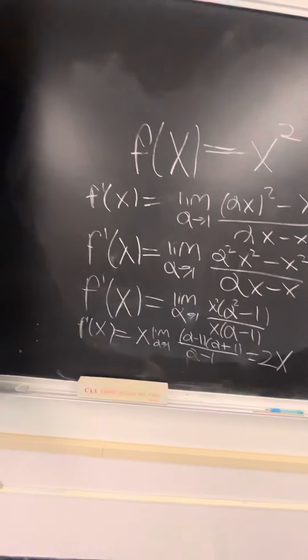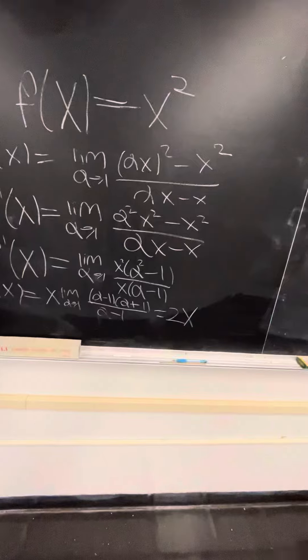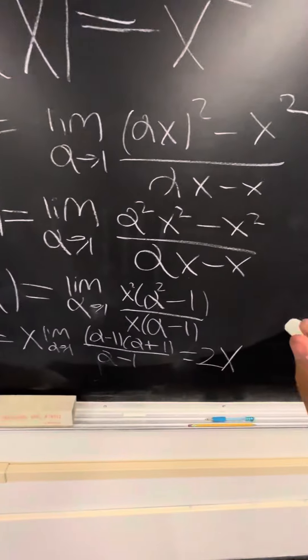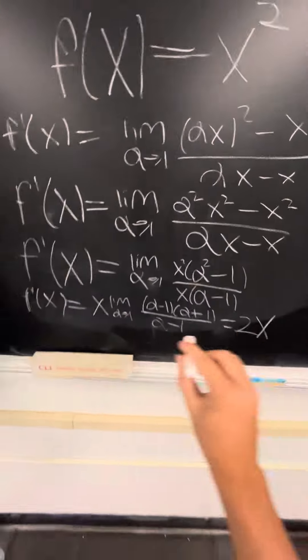So if f of x equals x squared, then f prime of x, according to this definition, is going to be the limit as alpha approaches 1 of alpha squared x squared minus x squared over alpha x minus x.